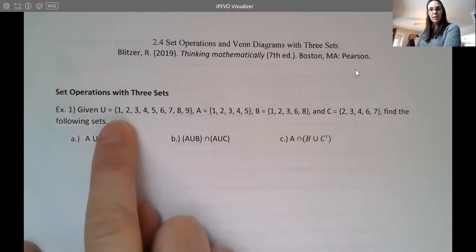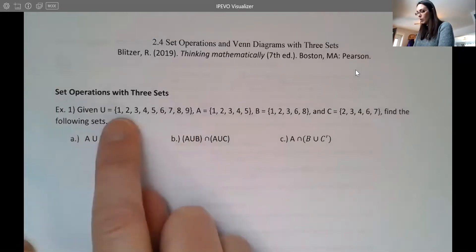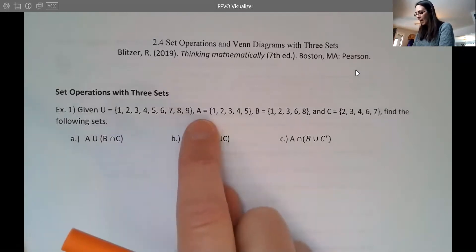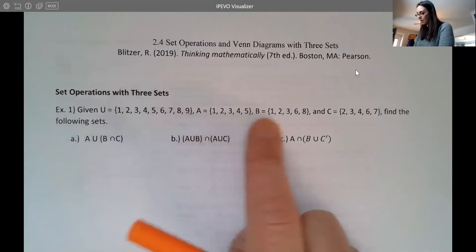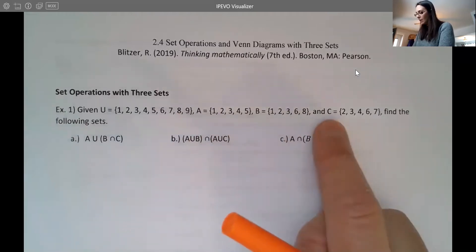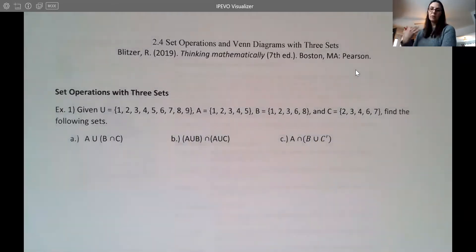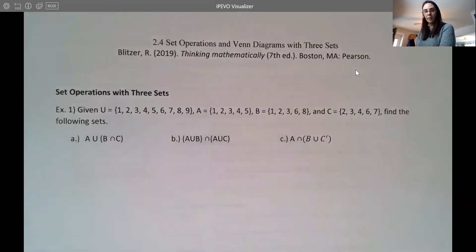So we have our universal set here, the whole numbers one through nine. Our set A would be the numbers one, two, three, four, five. Set B is the numbers one, two, three, six, eight. And set C are the numbers two, three, four, six, seven. So again, these are all subsets of the universal set, right? They're different rearrangements of that universal set. And now we're going to just kind of perform some operations with them.